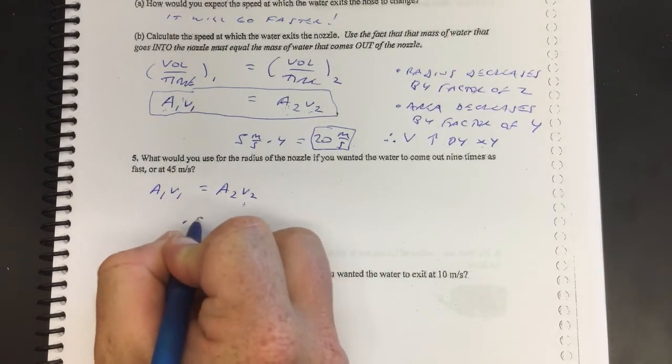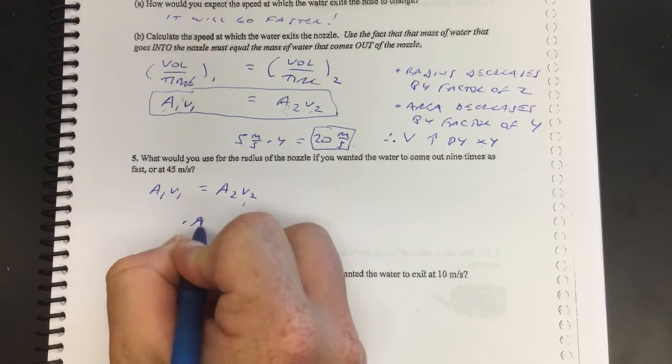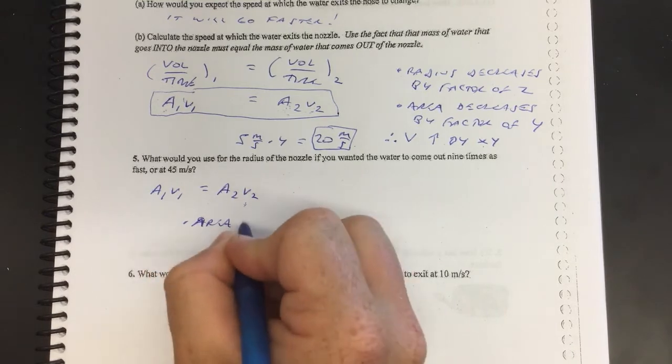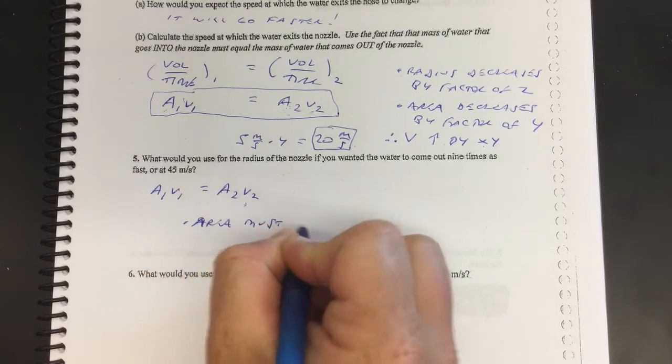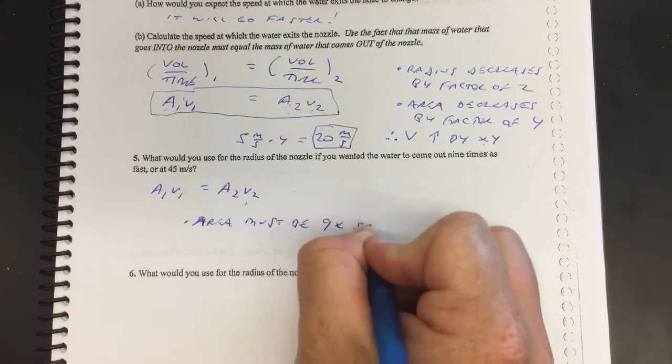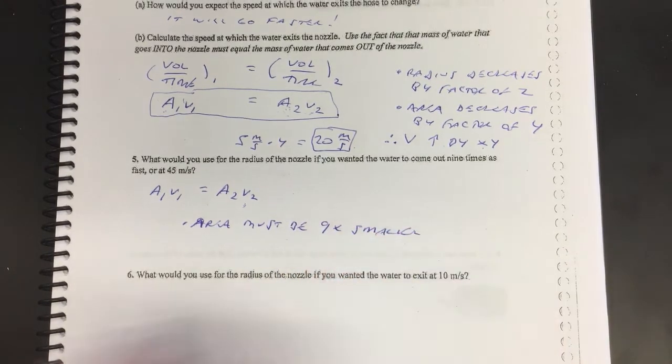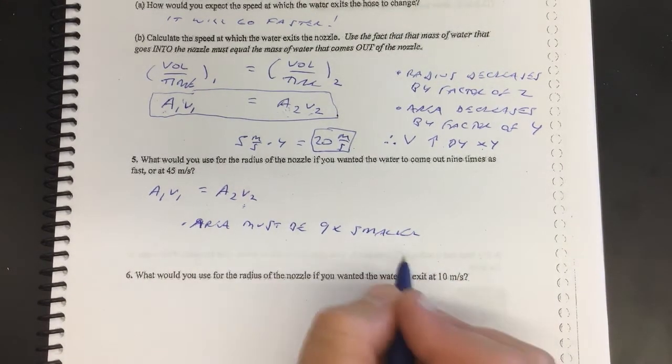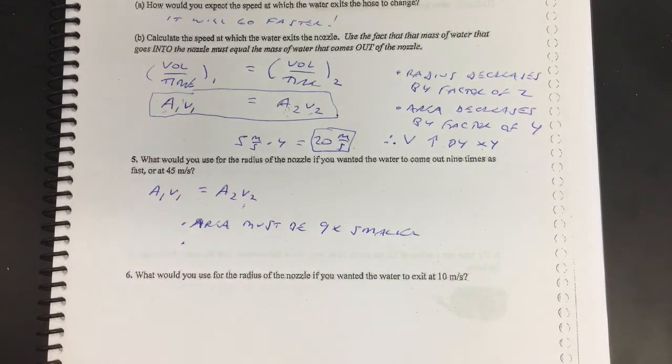Easy point: this is you can say the area must be nine times smaller. So then if we want the area to be nine times smaller, in order to make that happen, you want the radius to be three times smaller.